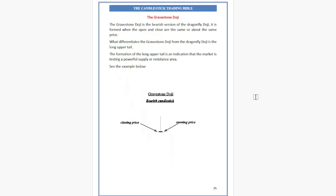The Gravestone Doji is the bearish version of the Dragonfly Doji. It is formed when the open and close are the same or about the same price. What differentiates the Gravestone Doji from the Dragonfly Doji is the long upper tail. The formation of a long upper tail is an indication that the market is testing a powerful supply and resistance area.